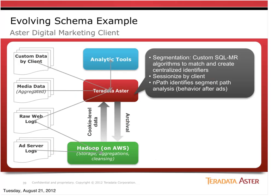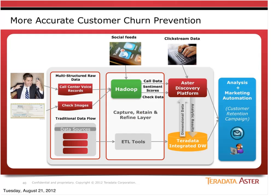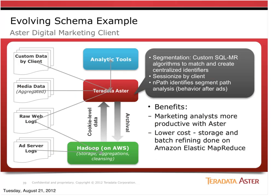I'll talk about one example use case. We have a couple of customers using Aster together with Hadoop. In this case, a company is ingesting large amounts of ad server data, trying to figure out for their clients what are the best digital channels to reach their segmented audience. They leverage the scale of Hadoop to ingest those ad server logs, transform that into cookie-level data, move it into Aster where they join it with web clickstream, aggregated spend data across different digital channels, as well as custom data from the client. The analyst then uses a BI tool to discover what are the best marketing channels for the organization — doing segmentation and path analysis. This is an example of how these technologies work together to get the best of both worlds in terms of cost, scale, and analytic performance.